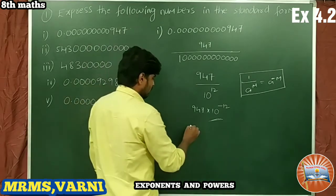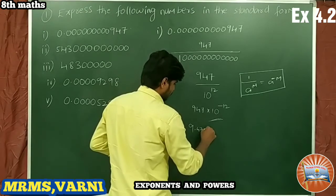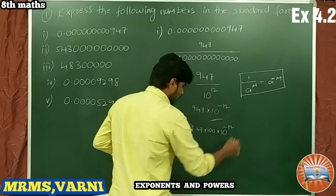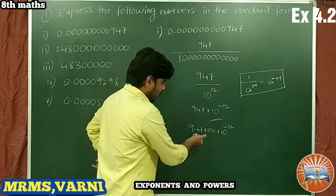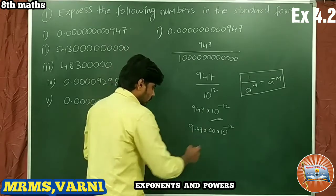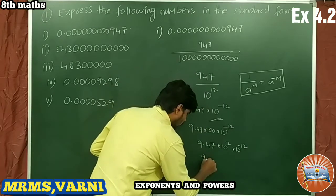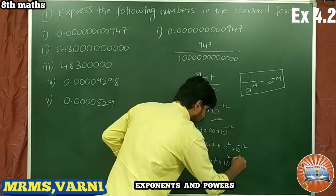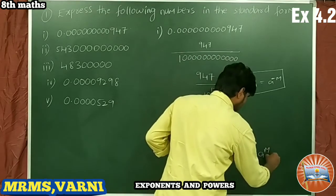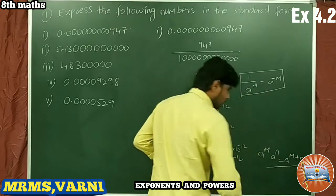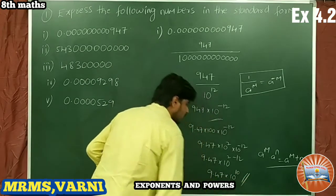We can simplify further: write 9.47 × 100 × 10^(−12). Multiplying 9.47 × 100 gives back 947. So this becomes 9.47 × 10^2 × 10^(−12). Using the formula a^m × a^n = a^(m+n), this gives 9.47 × 10^(−10).